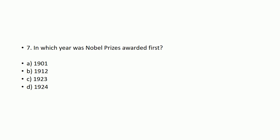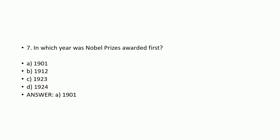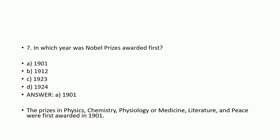In which year was the Nobel Prize awarded for the first time? Options: 1901, 1912, 1923, or 1924? The correct answer is 1901. The prizes in physics, chemistry, physiology or medicine, literature, and peace were first awarded in 1901.